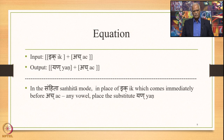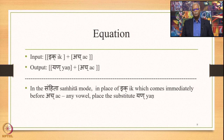This meaning can be put in the form of an equation. The input is Ikk plus Ach — the plus sign indicates close proximity or Samhita, and Ach is immediately coming after Ikk. By application of 6.177, Ikk gets substituted by Yan. The output is Yan plus Ach. So the input of 6.177 is Ikk plus Ach and the output is Yan plus Ach. In the Samhita mode, in place of Ikk which comes immediately before Ach — any vowel — place the substitute Yan.